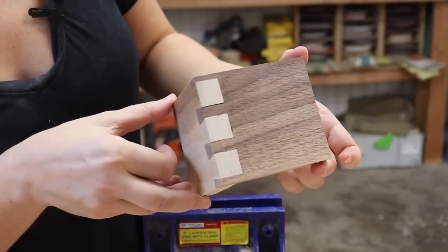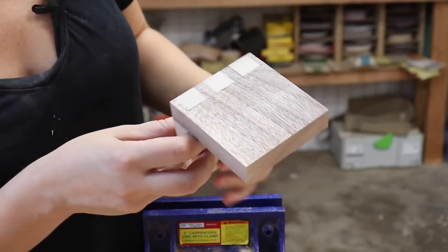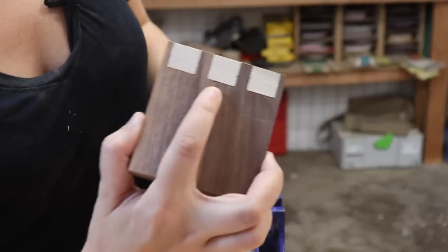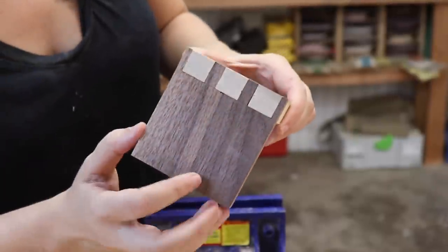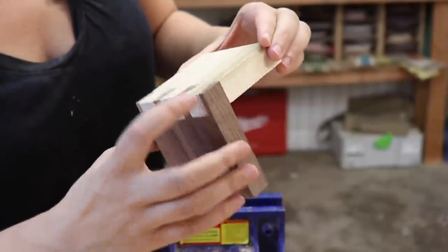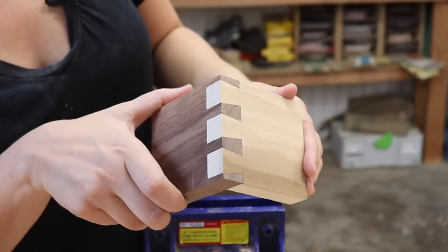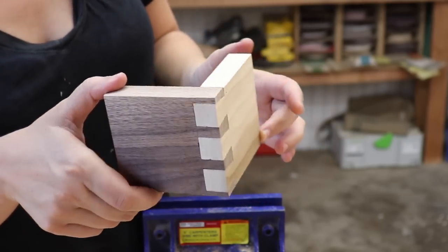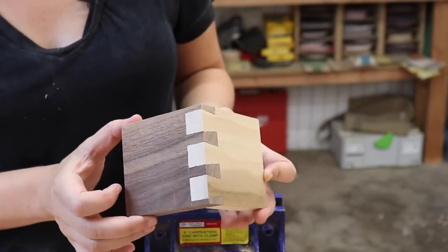So for my first hand-cut dovetails, I think that is pretty awesome. There are some few glaring mistakes. I went a little bit too far with the coping saw, if you can see right over there, and a few tiny little gaps here and there, but nothing a little sawdust and glue cannot fix. Now I'm going to cut some dovetails without using the jig. Let's see how that goes.